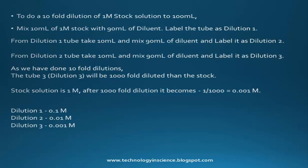To perform the 1000-fold serial dilution of a 1 molar stock to 100 ml: mix 10 ml of 1 molar stock with 90 ml of diluent and label this dilution 1. From dilution 1, take 10 ml and mix with 90 ml of diluent — label this dilution 2. From dilution 2, take 10 ml and mix with 90 ml of diluent — label this dilution 3. Dilution 3 is 1000-fold diluted relative to the stock. The concentrations are: dilution 1 = 0.1 M, dilution 2 = 0.01 M, dilution 3 = 0.001 M.